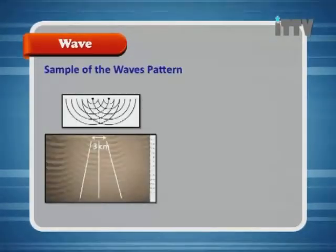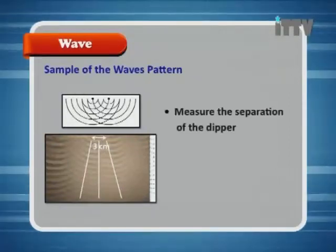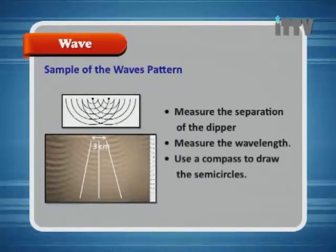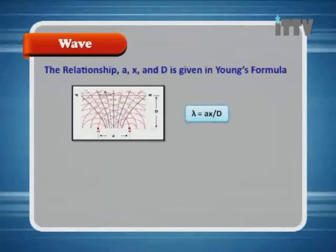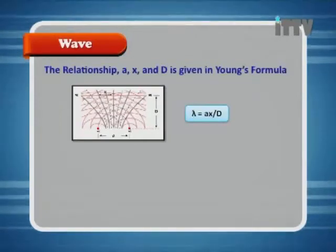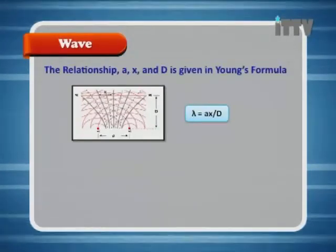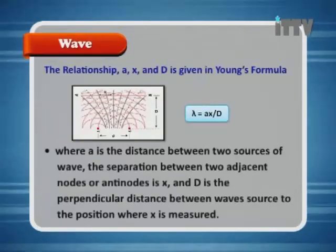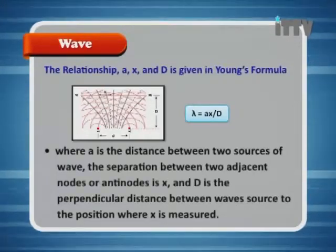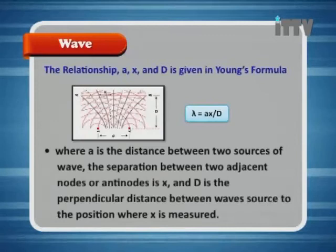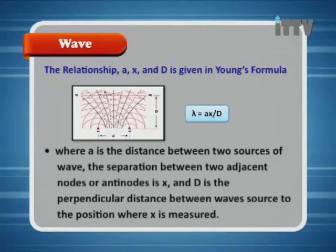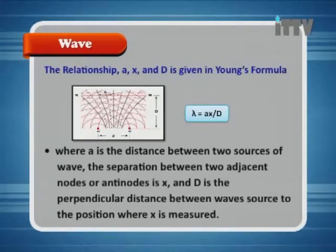Measure the separation of the dippers and the wavelength, then use a compass to draw the semicircles. The relationship between A, X, and D is given in Young's formula: lambda equals AX over D, where A is the separation between the two sources of wave, X is the separation between two adjacent nodes or antinodes, and D is the perpendicular distance from the wave source to the position where X is measured.